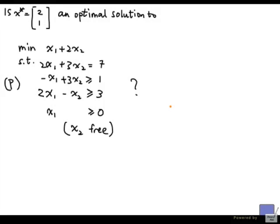We are going to look at how we can use the complementary slackness conditions to address the following question. Is x-star equal to [2,1] an optimal solution to the linear programming problem denoted by p?